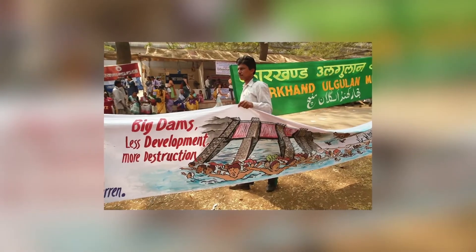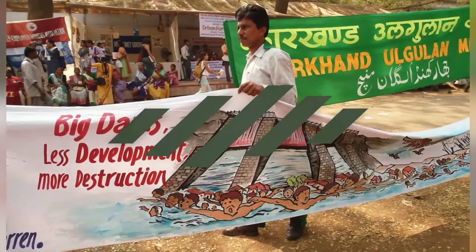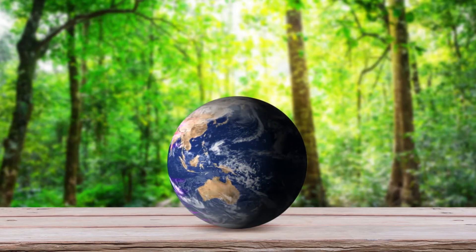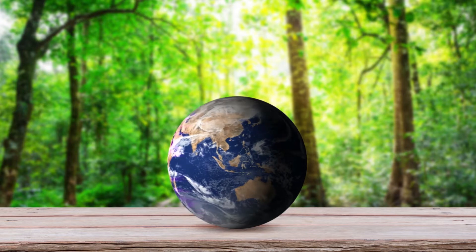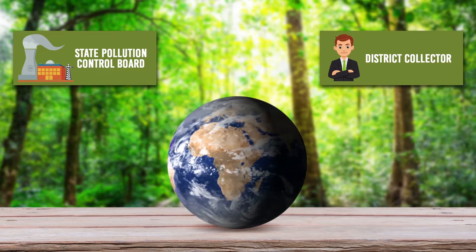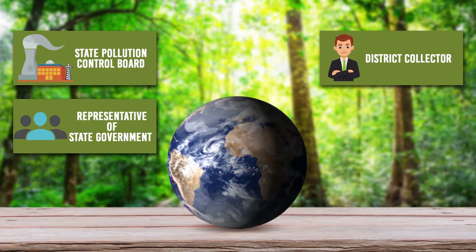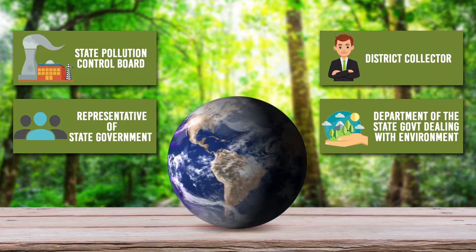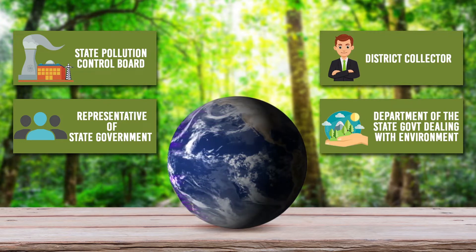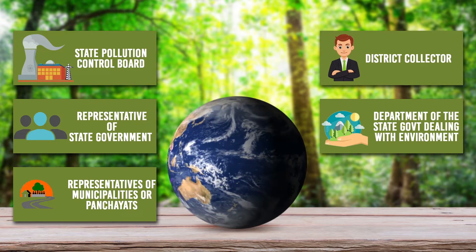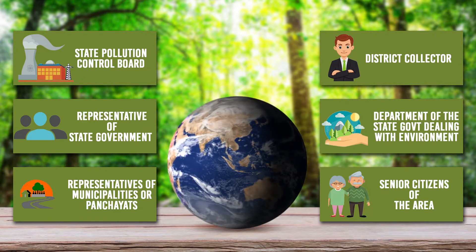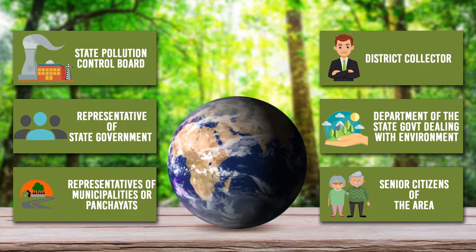They can also make oral or written suggestions to the State Pollution Control Board. Composition of the Public Hearing Panel: the panel may consist of the following — a Representative of the State Pollution Control Board; the District Collector or his nominee; a Representative of the State Government dealing with the subject; a Representative of the Department of State Government dealing with the environment; not more than three representatives of local bodies such as municipalities or panchayats; and not more than three senior citizens of the area nominated by the District Collector.